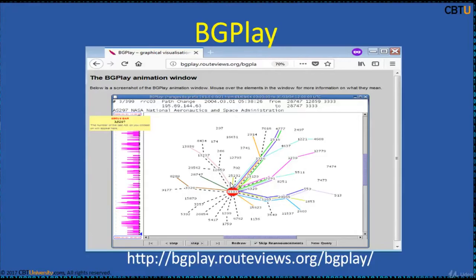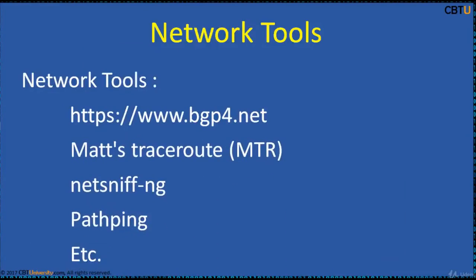This is RoutePuse BGP Play, a Java application which displays animated drops of the routing activity of a certain prefix within a specific time interval. It is graphical in nature, making it much easier to understand how BGP updates affect the routing of specific prefixes. The BGP Play database stores the last 10 days of data provided by the RoutePuse project data archive.